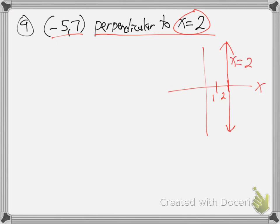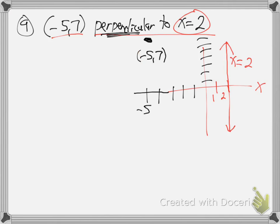They're telling us our line is perpendicular to x equals 2. Our line goes through the point back 5, up 7. And perpendicular means it hits the other line at a 90-degree angle — makes a T through it. So our line is like that, going through the red line at a 90-degree angle. It's perpendicular, like a T.